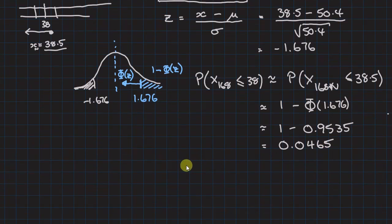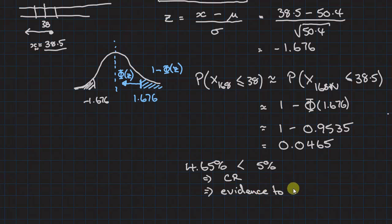This means that we've got a probability of 4.65%, which is smaller than the 5% of the test. That means we are in the critical region, which means that we have evidence to reject. We don't say it is wrong, we just have evidence to reject our null hypothesis.